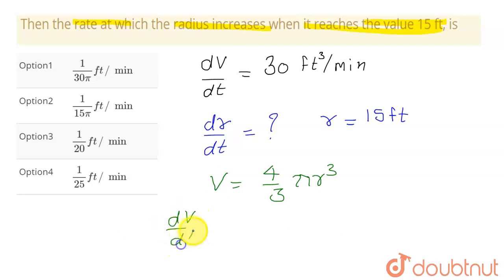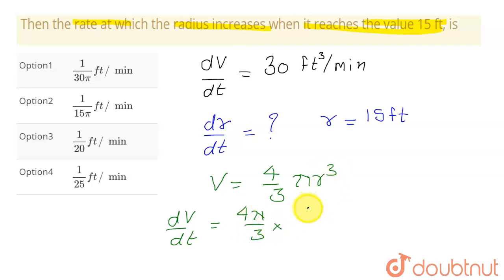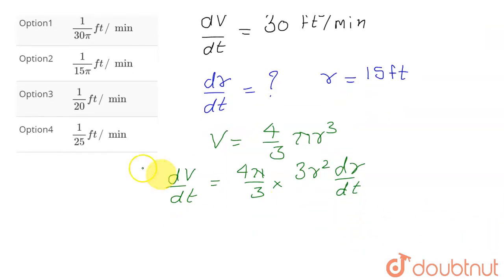Differentiating both sides with respect to time: dV/dt = (4π/3) · 3r² · dr/dt. The 3 in front and the 1/3 cancel, giving dV/dt = 4πr² · dr/dt.